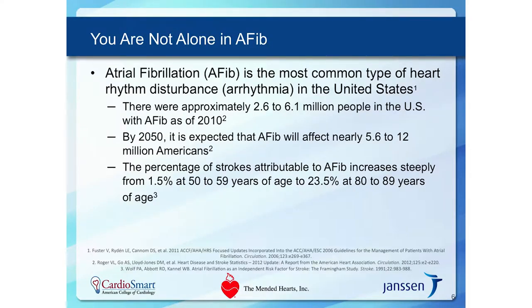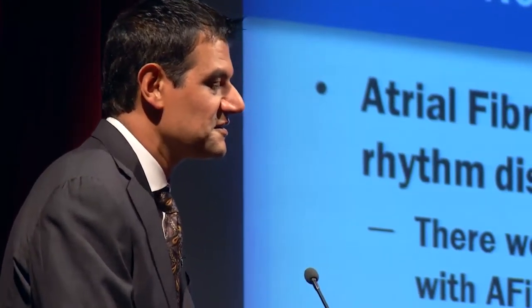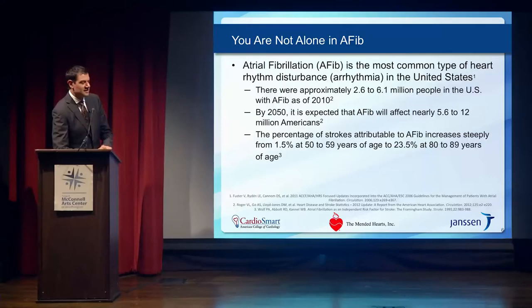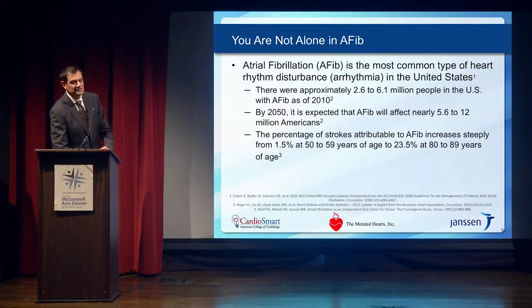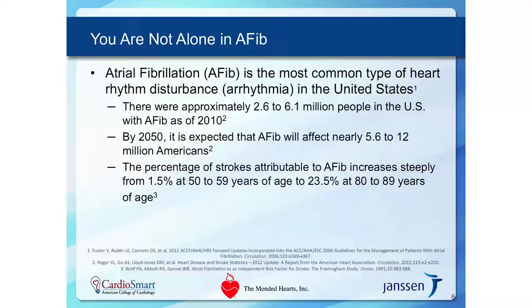Atrial fibrillation is the most common type of irregular heart rhythm in the United States, and unfortunately the incidence is actually increasing — which isn't the case for a lot of other heart conditions that we've done a better job of preventing. The real reason we care about atrial fib is not so much the direct problems it causes, but because of its complications.